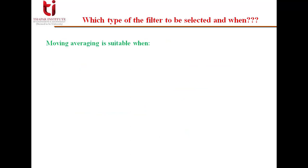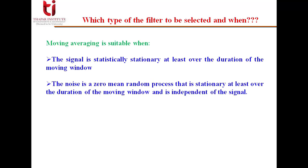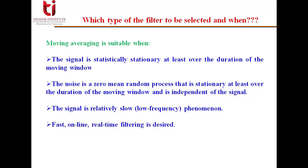Now moving averaging is suitable when the signal is statistically stationary at least over the duration of the moving window. The noise is a zero mean random process which is again stationary at least over the duration of the moving window and is independent of the signal. The signal should be relatively slow or low frequency phenomena. If fast online real time filtering is required then we can go for moving averaging filter.